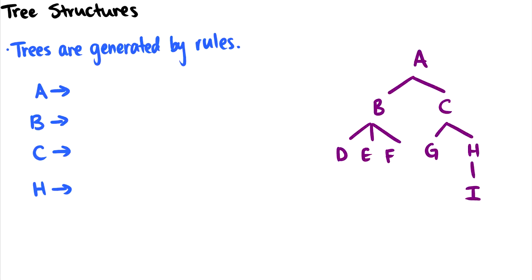The very first basic of tree structures is that trees are generated by rules. I'm going to use the same tree for all the examples on the right: we have A at the top, then it goes to B and C, B goes to D, E, and F, C goes to G and H, and then H goes to I.